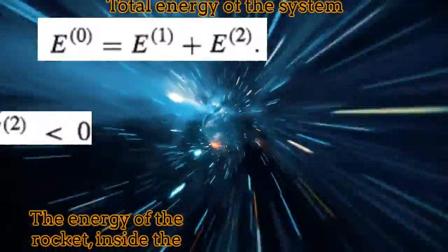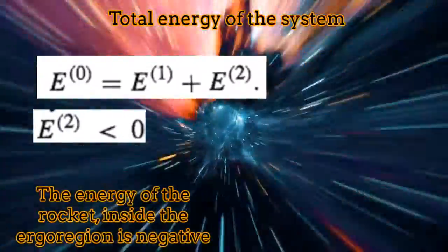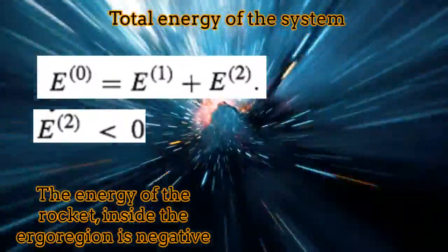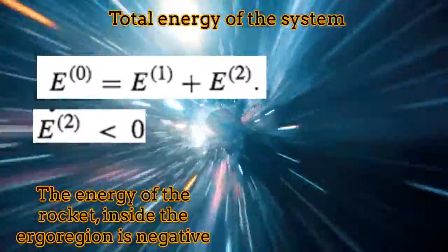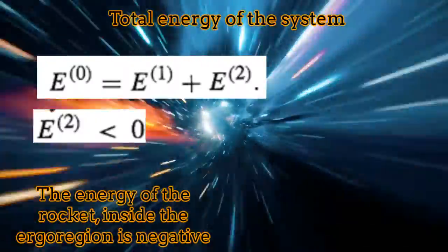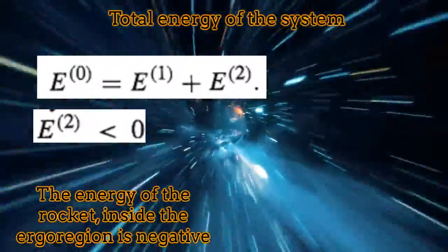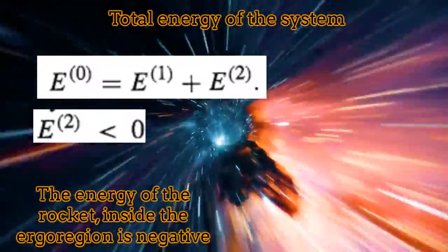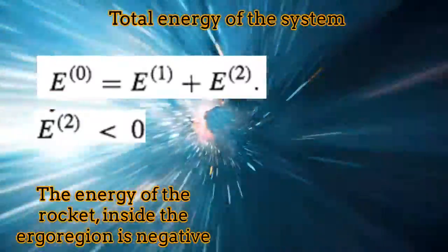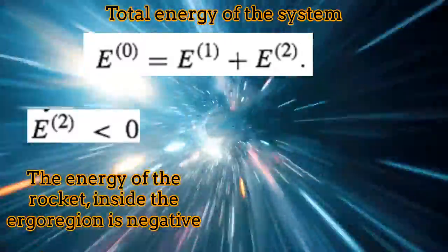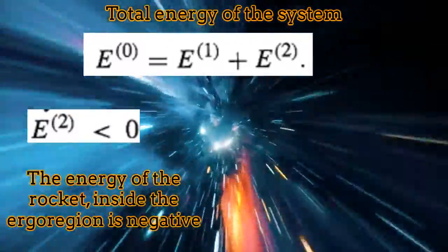In summary, once you enter inside the ergoregion of the black hole and then you throw a rocket in the appropriate direction, since the energy of the rocket is negative inside the ergoregion, then naturally you will be able to emerge from this ergoregion with an energy superior to the energy you had originally.